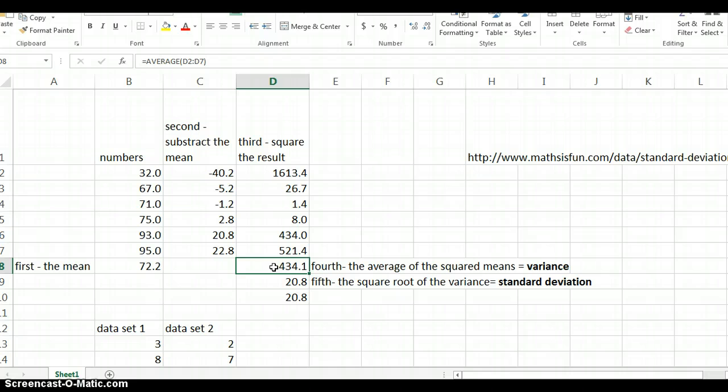Now the fourth step is to average the squared means. This is actually called the variance. So you can see I typed in average, selected all these values, clicked enter. And the fifth and final step is to take the square root of the variance. And now I have the standard deviation.